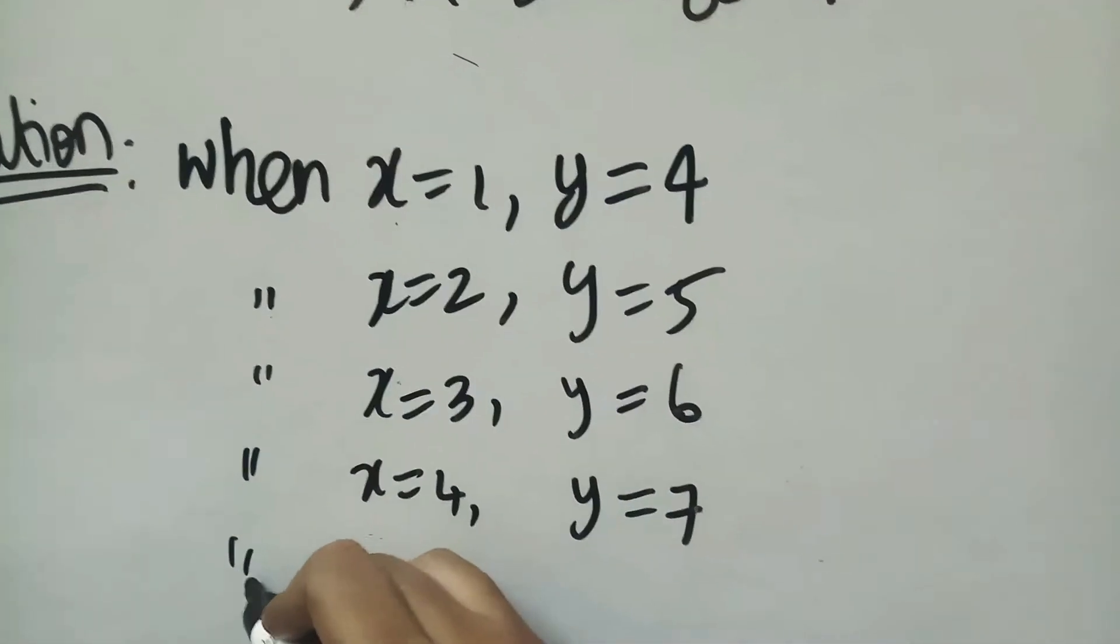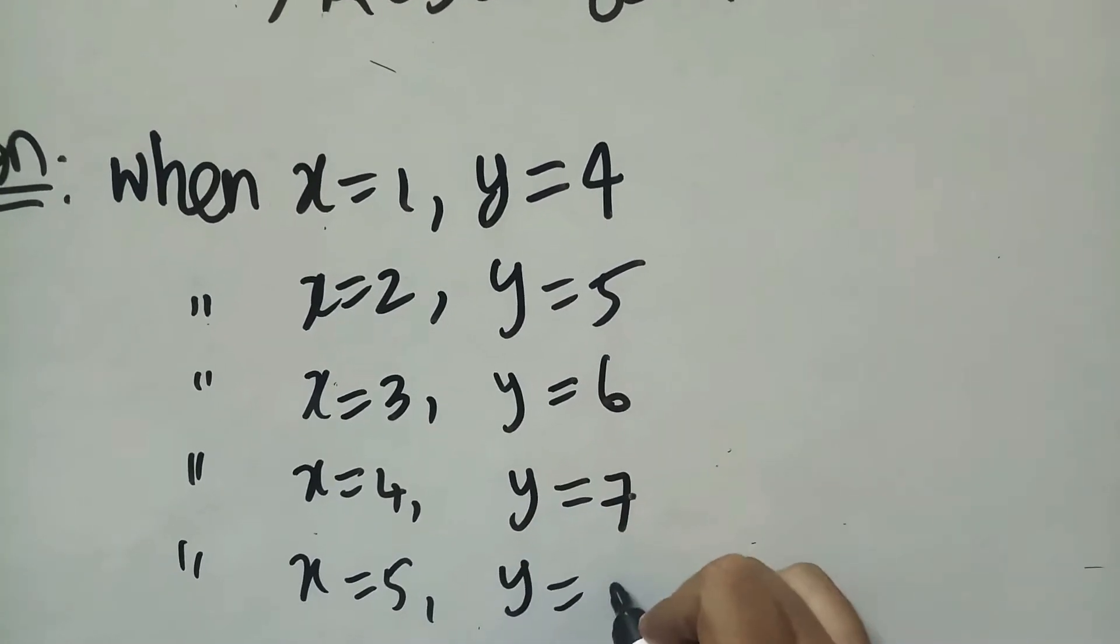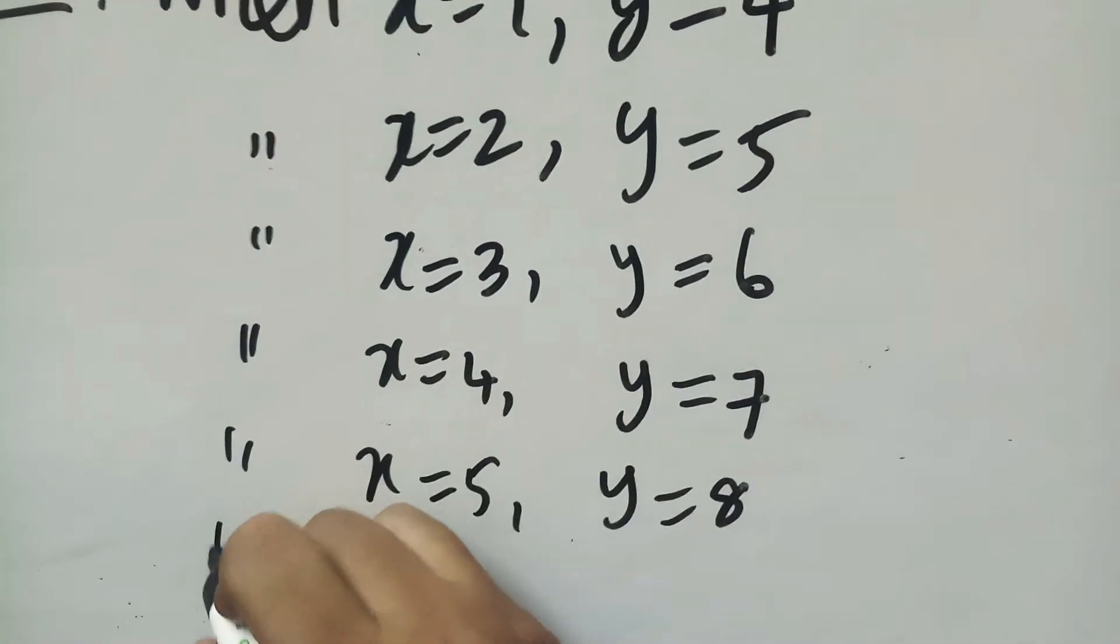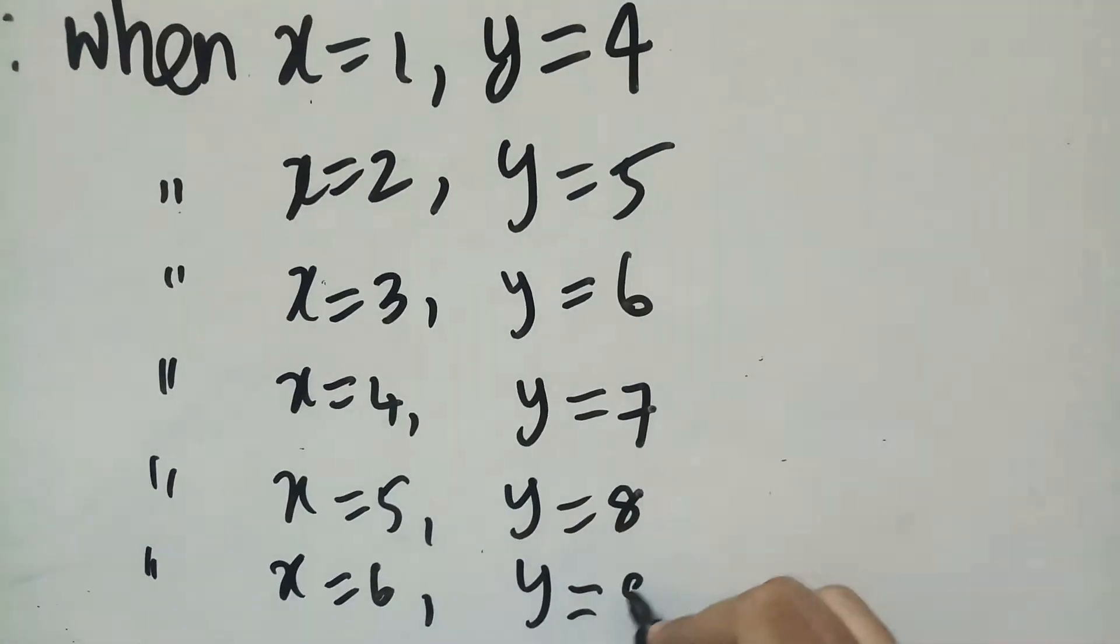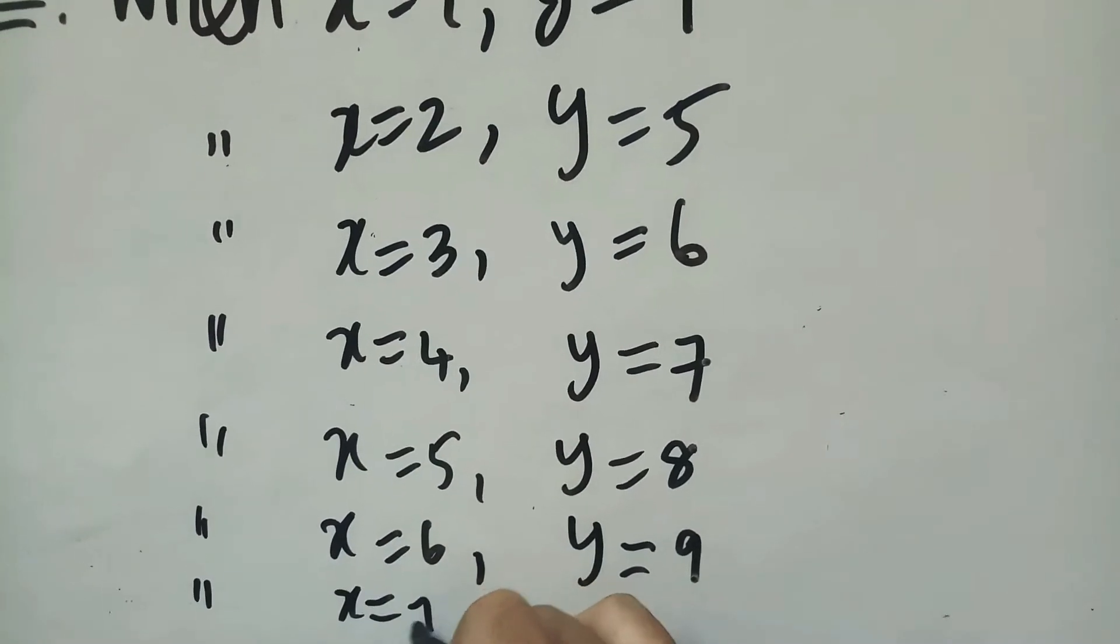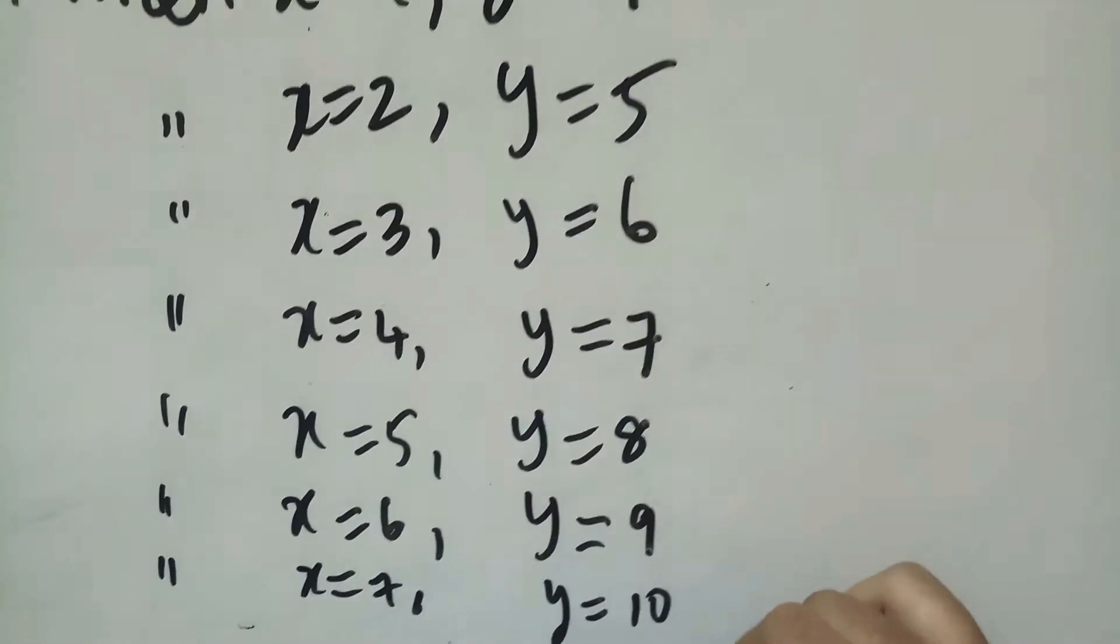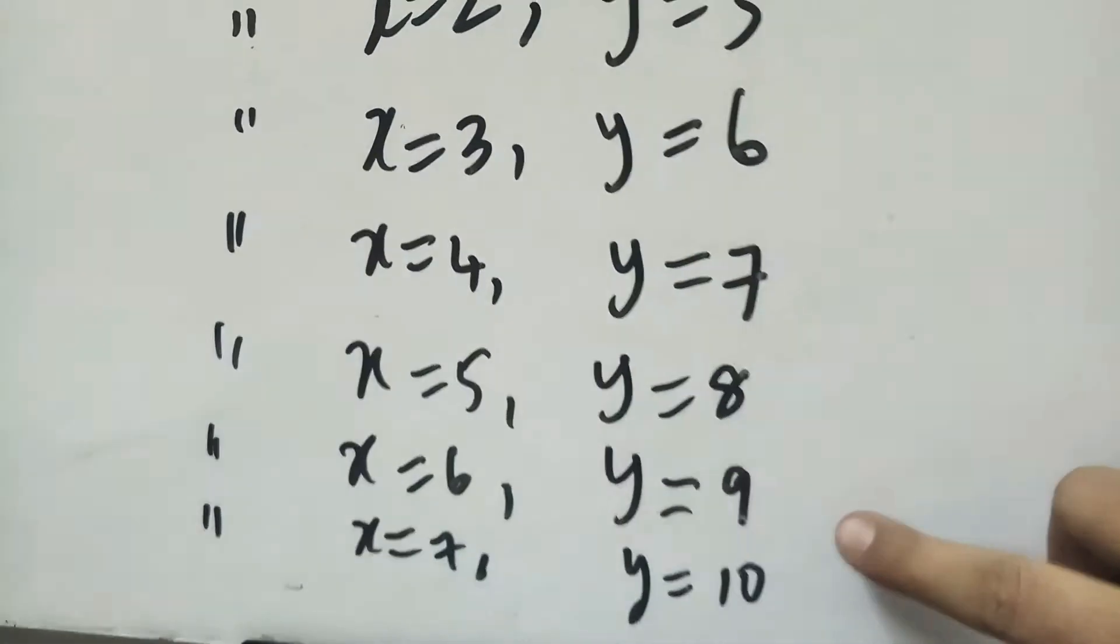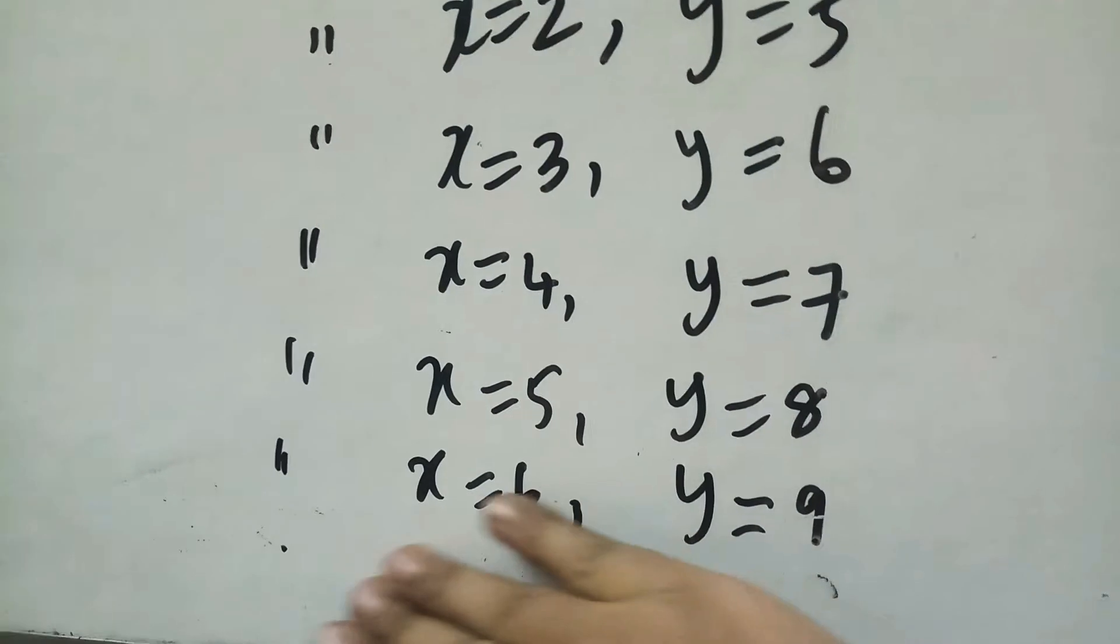It belongs to natural numbers. When x is equal to 5, 5 plus 3 is 8. When x is equal to 6, 6 plus 3 is 9. Belongs to natural numbers less than 10. When x is equal to 7, y is equal to 7 plus 3, which is 10. Since 10 is not less than 10, we stop here.